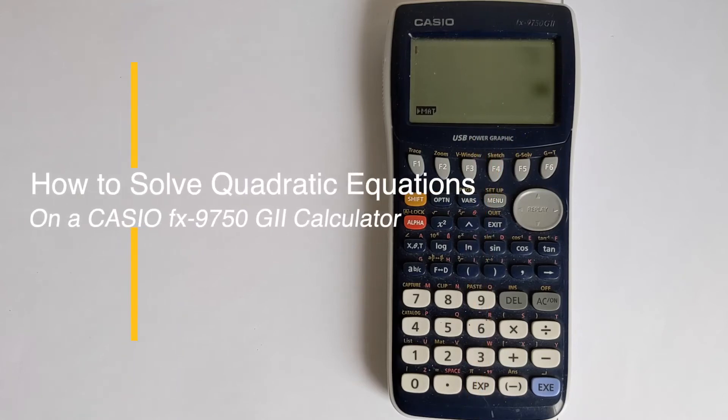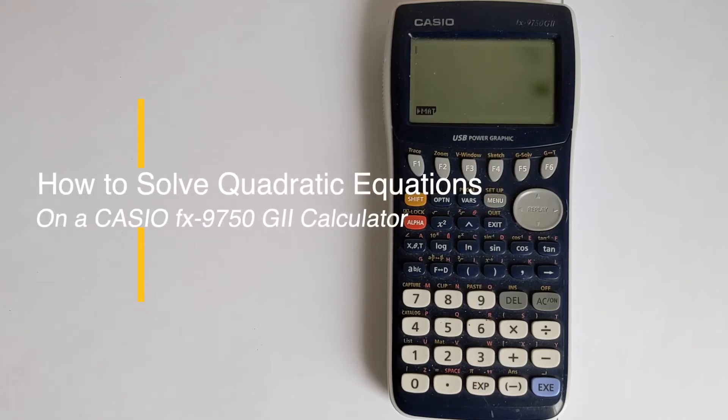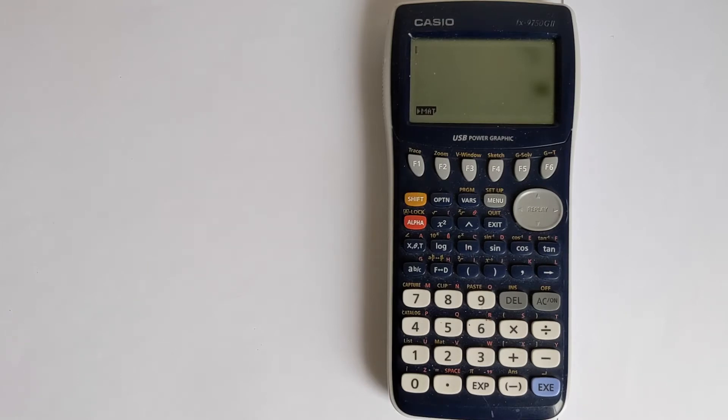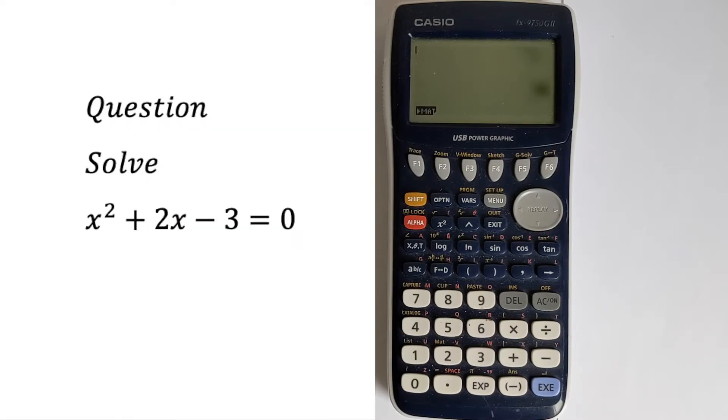In this video, I'm going to show you how you can solve quadratic equations using a Casio graphical calculator. We're going to do some worked examples. We're going to start by solving the equation x² + 2x - 3 = 0.